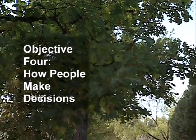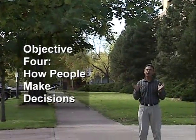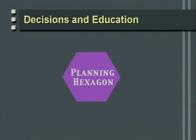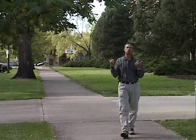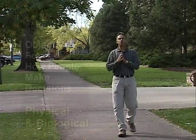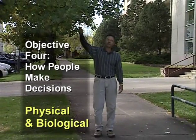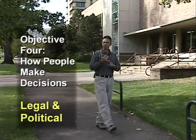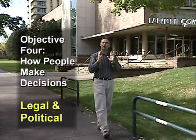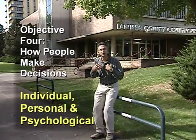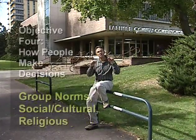Our fourth objective is to understand how people make decisions. I'm going to introduce a decision-making hexagon covering six different items. Obviously, natural resources — the physical and biological environment — is an important part of anyone's decision making, and we'll talk a lot about that throughout this program. But there are other parts of that hexagon: the legal and political system, and the individual person — what they think and how they behave.